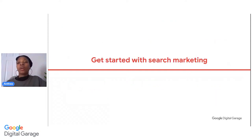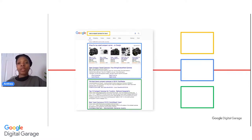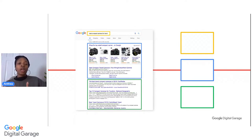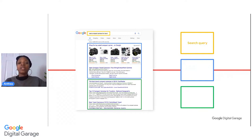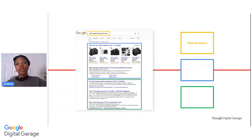Search marketing is really all about using the power of search to reach new customers. The image on screen is generally broken down into three things — it's known as the search engine results page, or SERP. For somebody looking for a particular product or service, or who has a problem to solve, they will go into a search engine such as Google and type in their search query. In this instance, it's looking for the best compact camera for travel. The search results that then appear are all related to the search query, so if you are a business who sells cameras for travel, you would want to appear in the search engine results page.